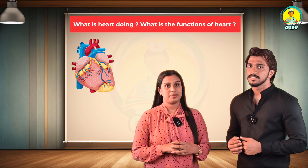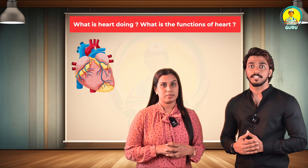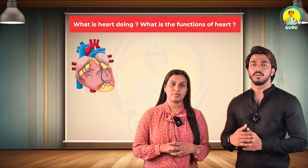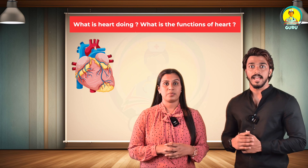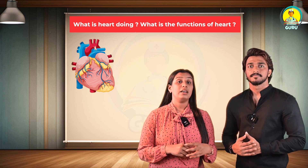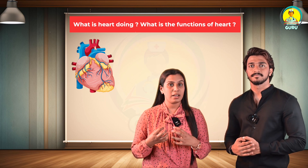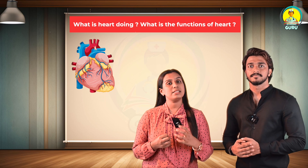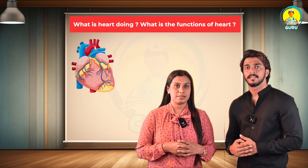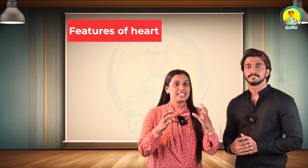What is the heart doing — what are the functions of the heart? Simply, the heart pumps oxygen and nutrient-rich blood to the organs, tissues, and cells of the body, and eliminates waste products. Blood is carried from the heart to the organs through arteries, arterioles, and capillaries. Blood returns to the heart through venules and veins.